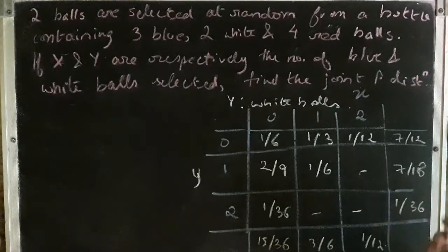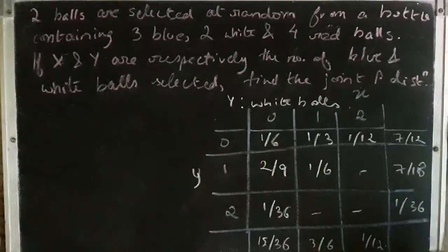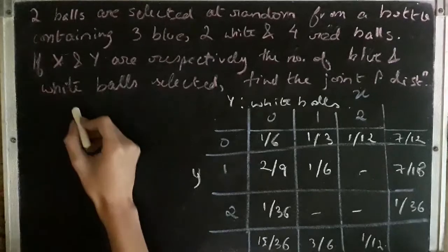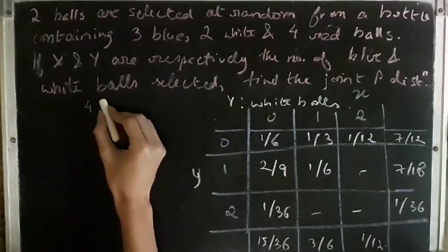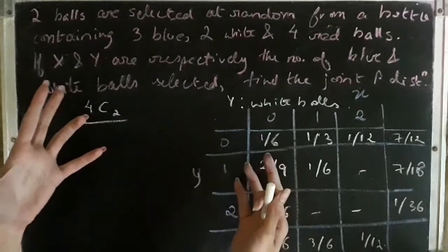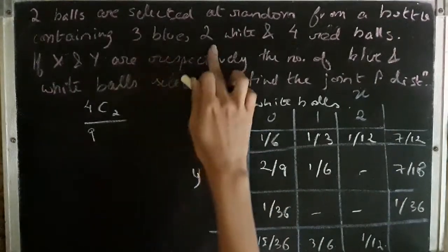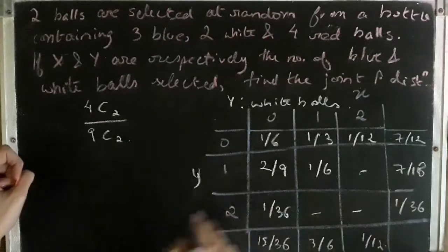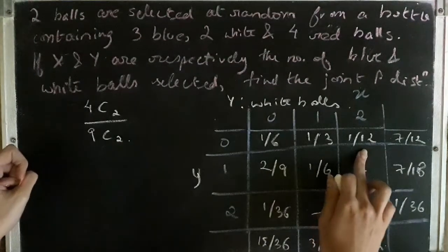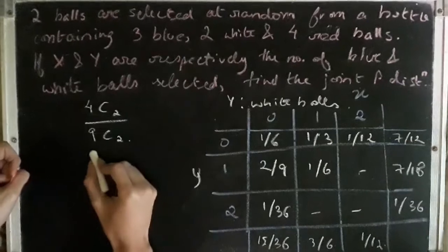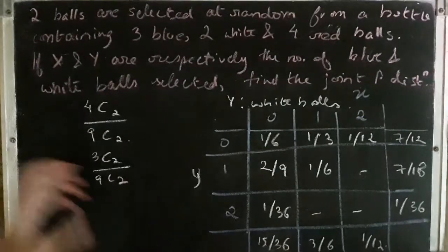Finding the cell values requires basic knowledge of combinations. For example, for x=0 and y=0, both balls selected are red. This gives 4C2 divided by 9C2, which comes out to be 1/6. Similarly, for 2 blue balls and 0 white balls, it is 3C2 divided by 9C2. In this way, using basic combinations, we find the respective probabilities for each cell.